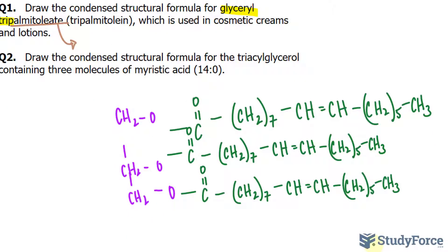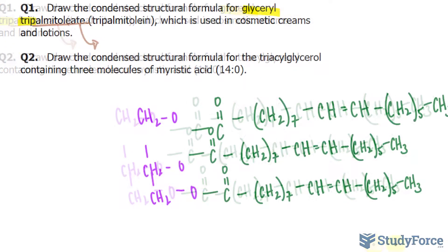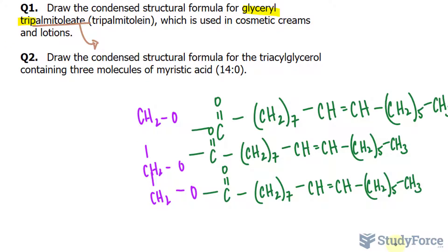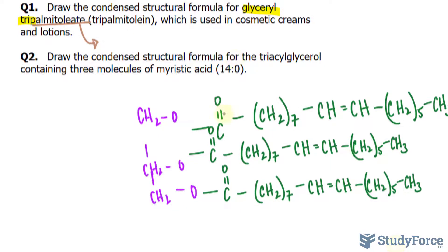What you see on your screen is the condensed structural formula for this triglycerol. In question number two: draw the condensed structural formula for a triglycerol containing three molecules of myristic acid. From the shorthand notation, we know that this is a saturated fatty acid because it has no double bonds, so this triglycerol will actually be a solid at room temperature.